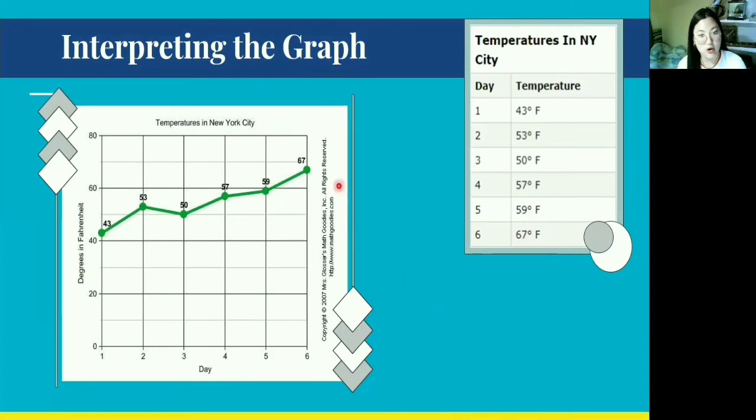Going back to the graph, we can interpret or conclude that on the sixth day, the highest temperature was recorded. This one: 67 degrees Fahrenheit. And on the first day, the lowest temperature was recorded: 43 degrees Fahrenheit.